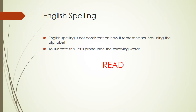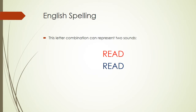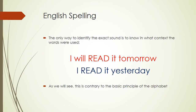To illustrate this, let's pronounce the following word. This letter combination can actually represent two sounds: 'read' and 'read.' The only way to identify the exact sound is to know in what context the words were used. For example: 'I will read it tomorrow' versus 'I read it yesterday.'